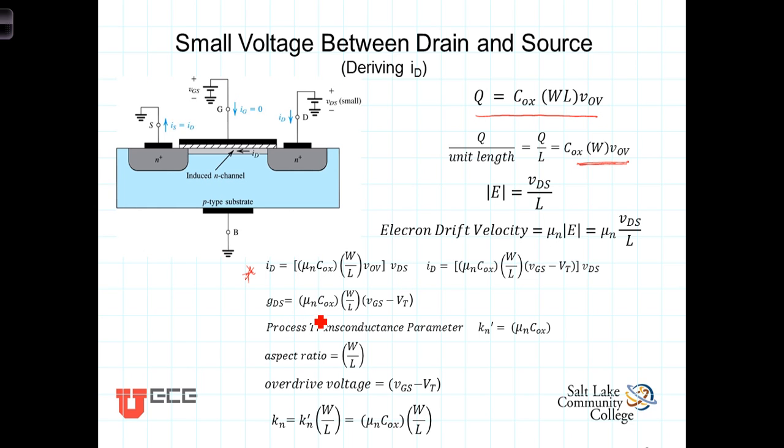Now, let's look at this conductance term. It consists of three different terms, mu sub n times the capacitance. The product of those two is known as the process transconductance parameter. It's a function of the materials that the channel is made out of. And we're going to refer to that as K sub n prime. So K sub n prime is simply equal to mu sub n times C of the oxide.